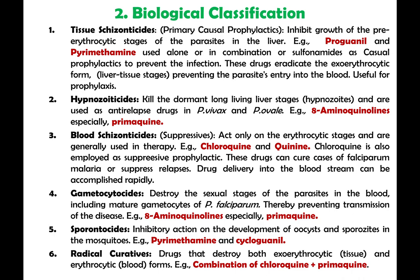Biological classification is based on the stage at which a drug acts. Tissue schizonticides, called primary causal prophylactics, inhibit the growth of pre-erythrocytic stages of parasites in the liver. Proguanil and pyrimethamine are used alone or in combination with sulfonamides as causal prophylactics — they eradicate the exoerythrocytic liver tissue stage, preventing parasites from entering the blood. Hypnozoiticides kill the dormant long-living liver stages called hypnozoites and are used as anti-relapse drugs in P. vivax and P. ovale, where the propensity is high. 8-aminoquinolines — particularly primaquine — are used for this purpose.